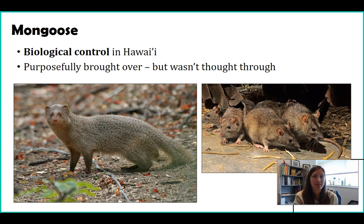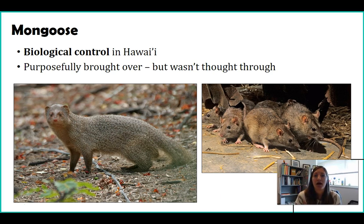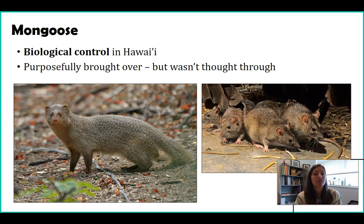Another invasive species is not found in Maryland but is found in the United States and Hawaii. It was a species brought over to serve as a biological control — a natural or biological way of typically controlling a pest. In Hawaii, rats were introduced by colonists on their boats and were decimating sugar cane plantations. Farmers didn't want to introduce rat poison into the ecosystem, so instead they thought: why not bring over a predator that will eat the rats? And that's exactly what they did.